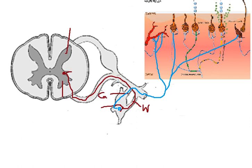So this is all about grey rami and white rami communicants. You can see the grey rami communicants is situated just medial to the white rami communicants. Thank you.